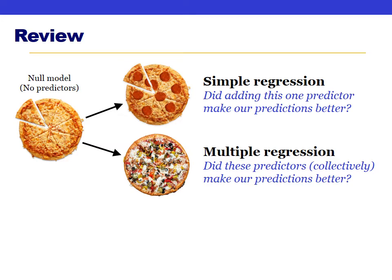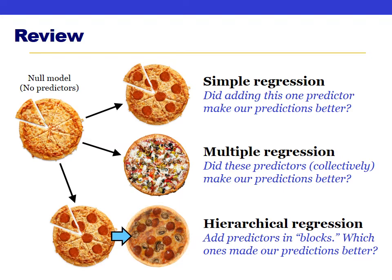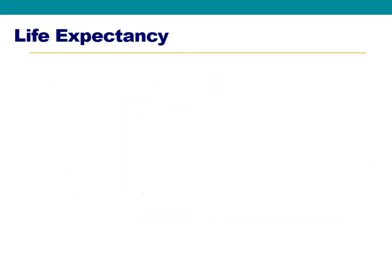We also talked about hierarchical regression, which is similar but we add predictors in steps or blocks. Maybe we first add pepperoni to see if it improved on plain cheese, then add sausage to see if having both is better than just pepperoni. This allows us to identify which predictors made our predictions better, and at what point and by how much, by looking at the R-squared change and F-change statistics in our output.